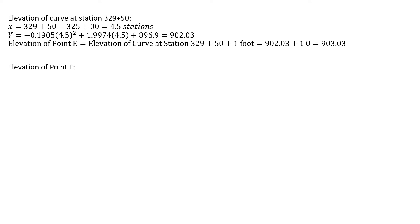We need to find the elevation of point F. That's going to be 906.9 minus 50 feet. We're 50 feet away from our PVI at a grade of 1.9974%. So the elevation of point F is 905.9 feet.